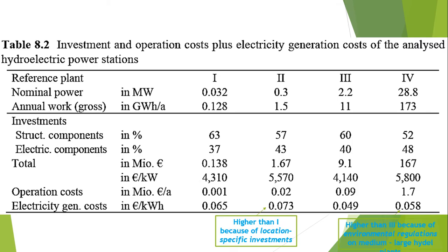Now let's discuss about the electricity generation cost. The annual average real production costs that remain constant for a longer period for a hydroelectric power plant are derived from the overall investment, for smaller plants with an output below 1 megawatt and larger plants with an output above 1 megawatt. This table shows that the technical lifetime of the structural components is assumed to be around 60 to 80 years, averaging about 70 years. The technical lifetime for the machines and the electrical parts are assumed to be 30 to 40 years respectively.